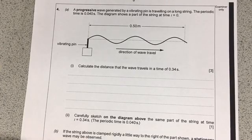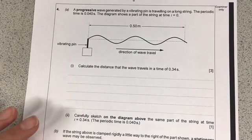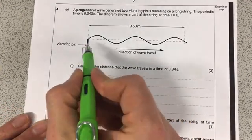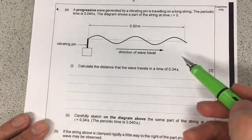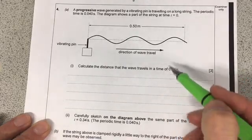This question is from the 2017 Unit 2 AS Physics exam paper, it's a question on waves. The first thing these guys want me to do is to calculate the distance a wave will travel in a certain amount of time.